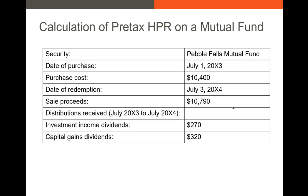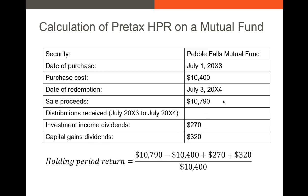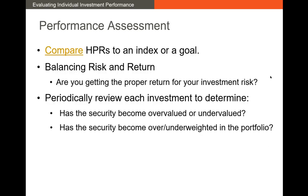Now let's look at the holding period return on a mutual fund — we'll call it Pebble Falls. Date of purchase: July 1st, 20X3 for $10,400. Redemption date: July 3rd, 20X4; sale proceeds $10,790. We received distributions in the form of capital gains distributions and dividends. Our HPR is: ending value minus purchase price, plus dividends received, plus capital gains distributions, all divided by the purchase price. That gives us an HPR of about 9.42%.